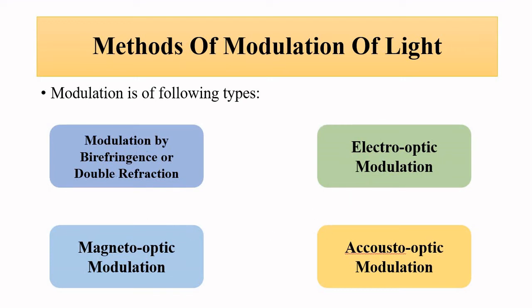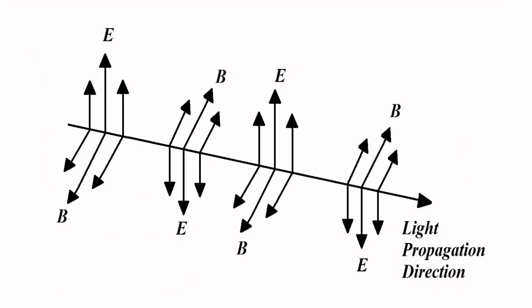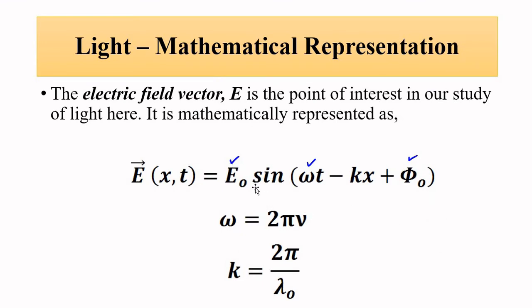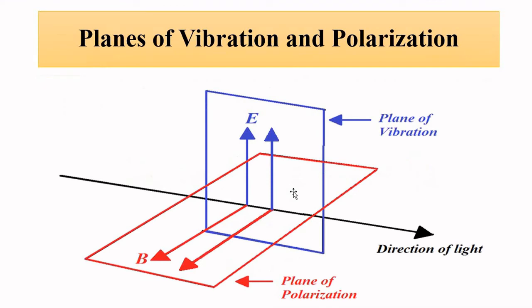To summarize: when it comes to modulation of light, we are only concerned with the electric vector E. The parameters that can be changed to modulate light are amplitude, frequency, phase, and the state of polarization — which means restricting electric vectors to a certain plane and rotating that plane by a certain angle.